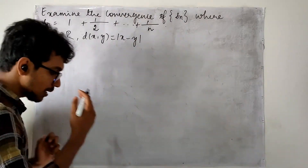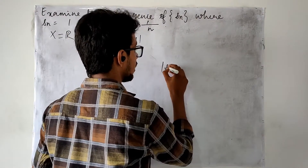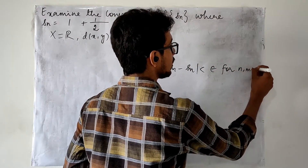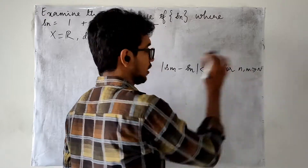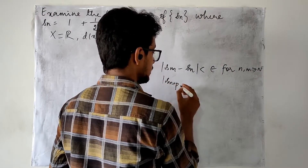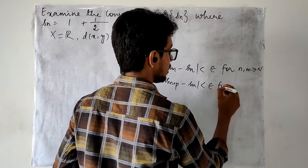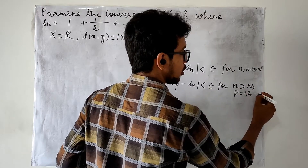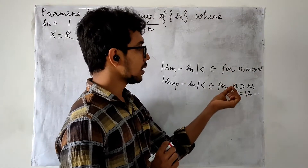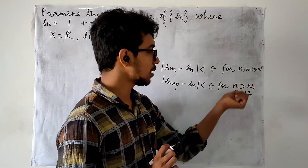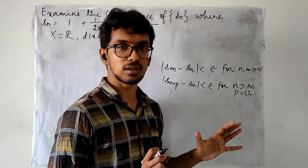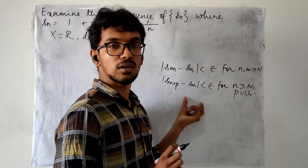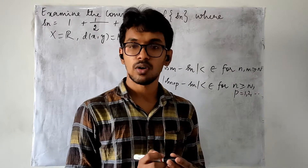Let me refresh the definition of a Cauchy sequence in another way. We have seen that |Sm minus Sn| less than epsilon for n, m bigger than or equal to N. This may also be put in another way: |S(n+p) minus Sn| less than epsilon for n greater than N and p runs from 1 onwards. So we are rephrasing this into that form and with the help of this form we are going to work out the problem.